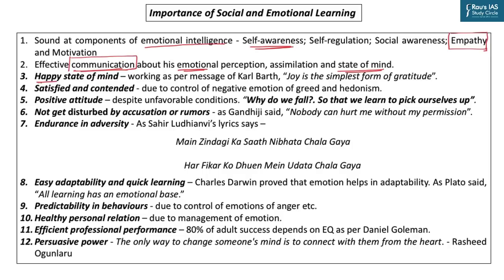People possessing good social and emotional skills also generally have a happy state of mind. When you don't let negative emotion take over, you are generally happy. As Karl Barth said, 'Joy is the simplest form of gratitude' — UPSC has also asked this once as an essay topic. This state of body and mind is there when you feel satisfied and contented, when negative emotions of greed and anger are not ruling you. A socially and emotionally strong person generally has a positive attitude despite difficulties and hurdles — as famously quoted from The Dark Knight: 'Why do we fall? So that we learn to pick ourselves up.'